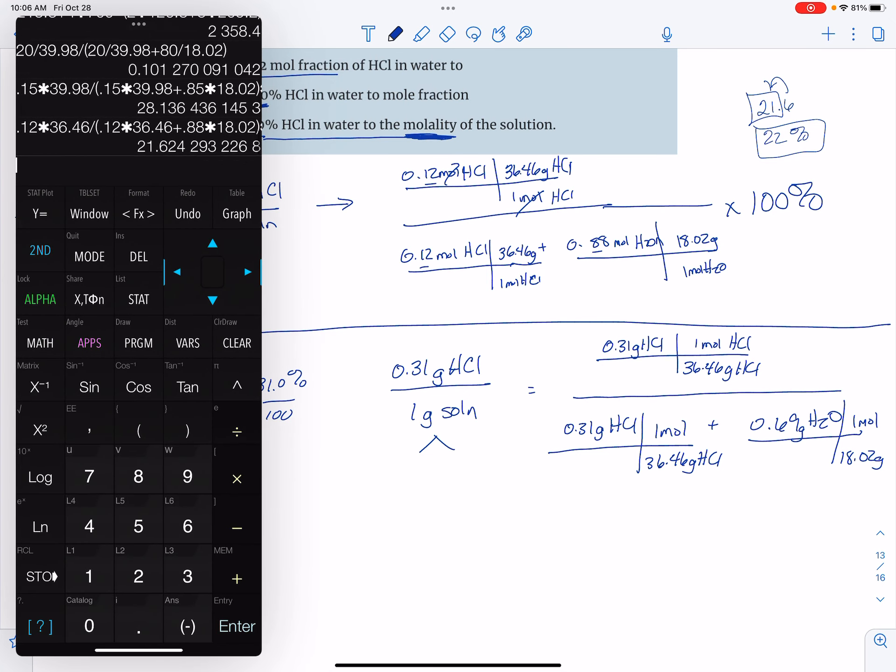Now I have my calculator, and I'm tempted to just redo that problem right there. Instead of times, I'm just going to do divided by, and I'm not going to use the times 100%.